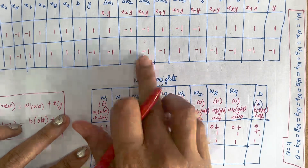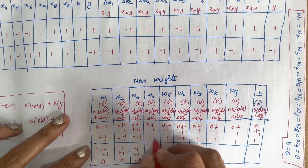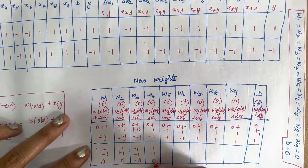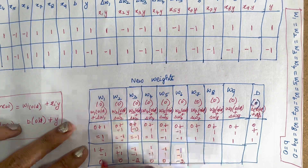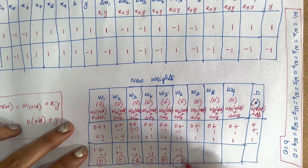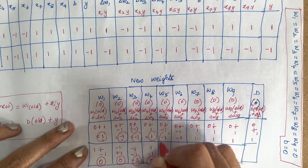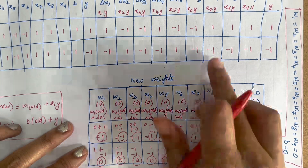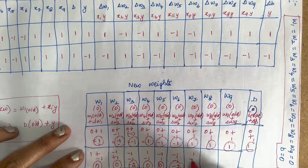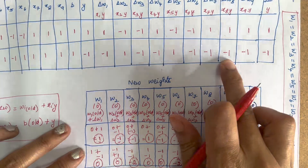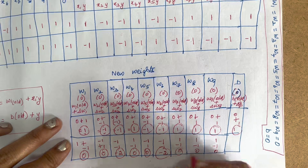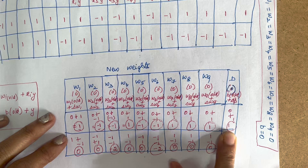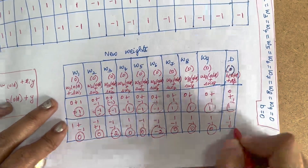Finding new weights using old weight + change: W3 = (−1)+(−1) = −2; W4 = 1+(−1) = 0; W5 = (−1)+1 = 0; W6 = (−1)+(−1) = −2; W7 = 1+(−1) = 0; W8 = 1+(−1) = 0; W9 = 1+(−1) = 0. Bias = 1+(−1) = 0. For W1 = 1+(−1) = 0; W2 = (−1)+1 = 0.